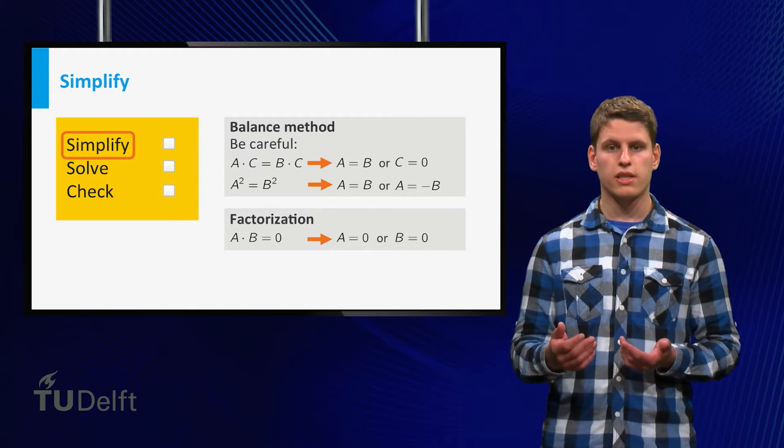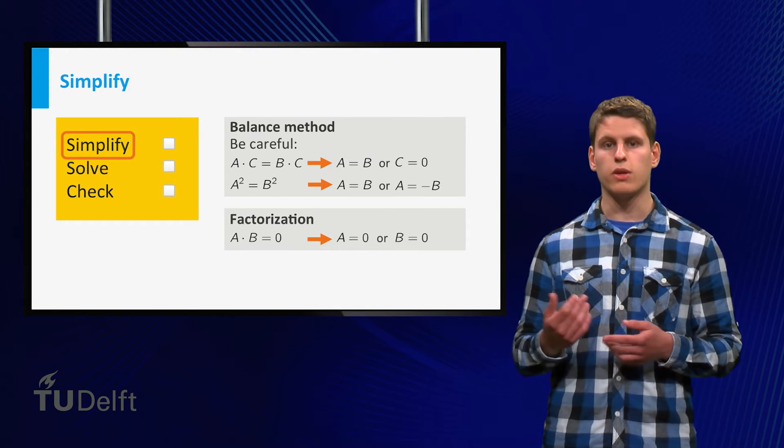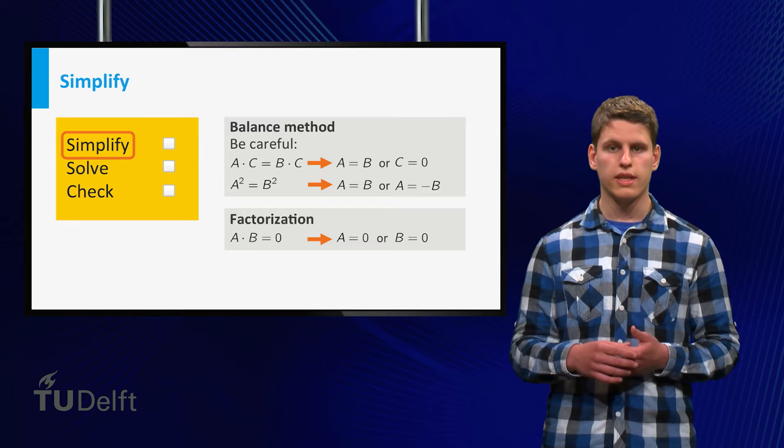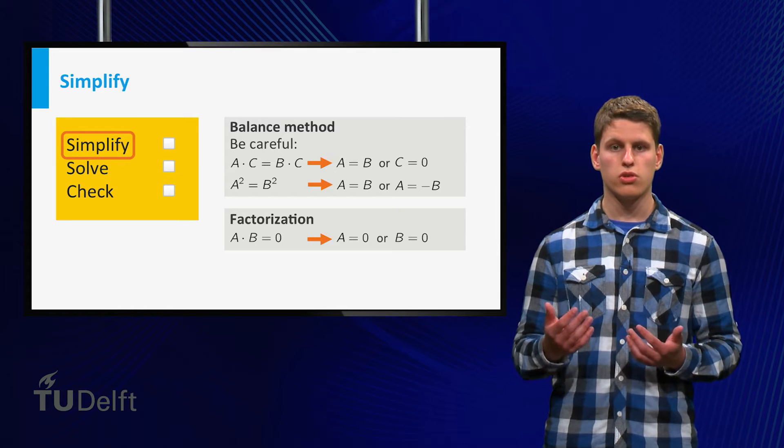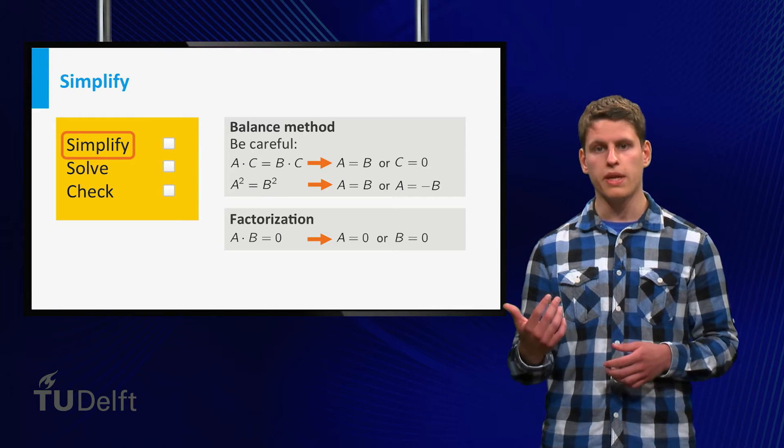Some equations can be factorized, that is, written in the form a times b equals zero. In this case, the equation reduces to two simpler equations: a equals zero or b equals zero.